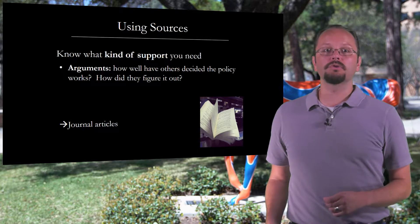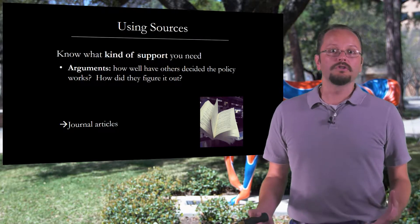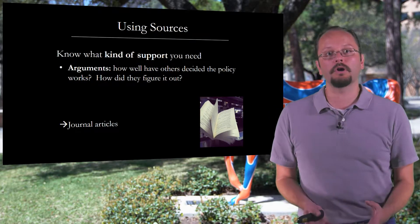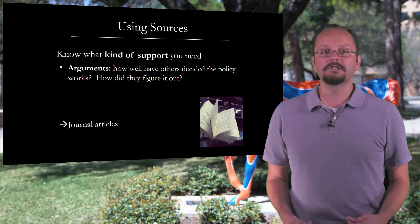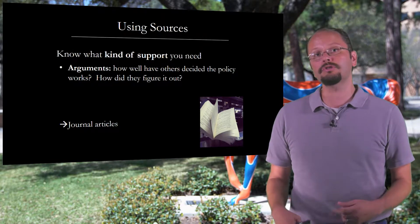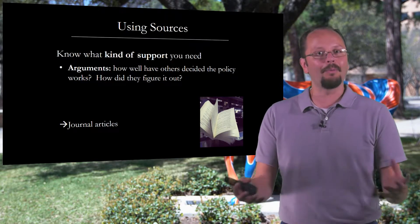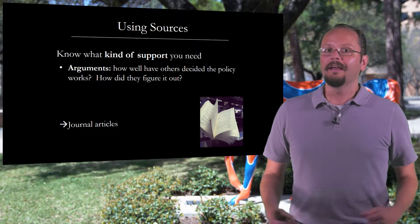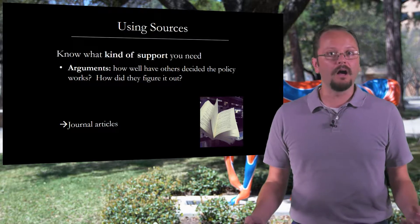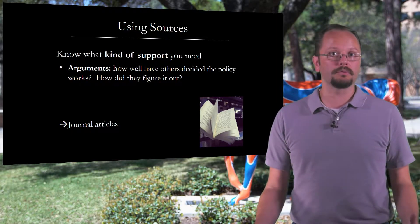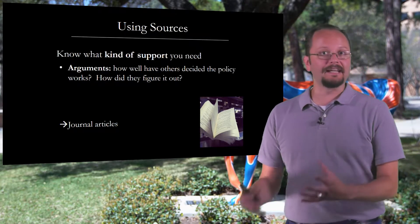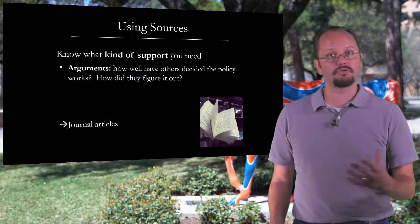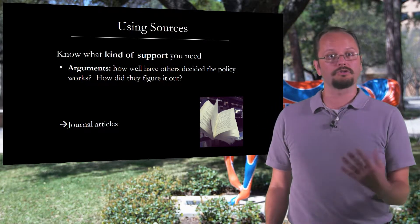It's possible that you'll need to use other people's arguments to support your argument about how well the policy worked. If you need to import other people's arguments, you're definitely going to need your academic journal articles, since those are usually the sources that make the clearest arguments about how well things work. When you do that, you may want to provide some information about how they figured that out — for example, noting that in a study on a national sample, Johnson found that the problem has been getting steadily worse — providing a little information about the methods the sources used.